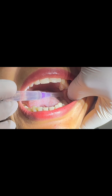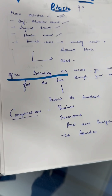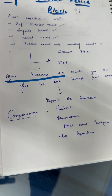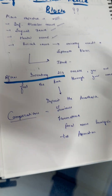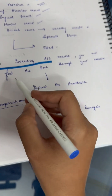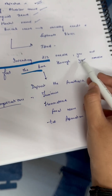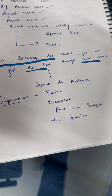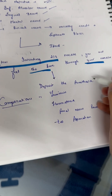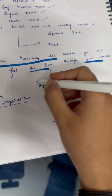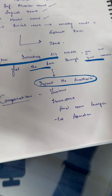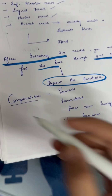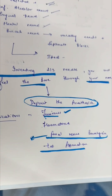With the needle insertion parallel to the occlusal plane, you will give the inferior alveolar nerve block. After inserting the needle two-thirds of its length, you will feel the bone through your needle, and that is the exact point where you deposit your anesthesia.